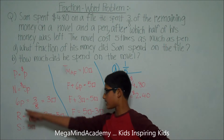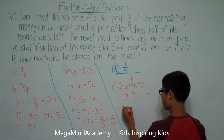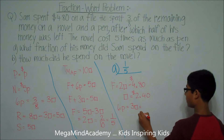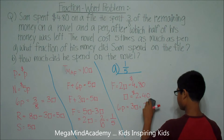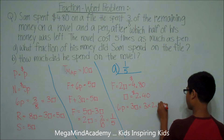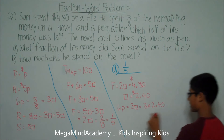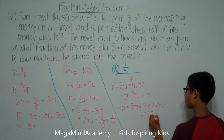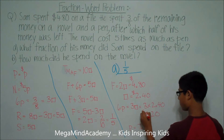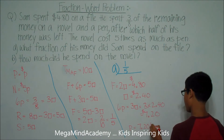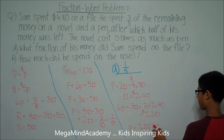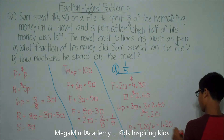This means that 6P, or six pens, is equal to three units, which is equal to three times $2.40, which is equal to $7.20. So P, the cost of one pen, is equal to $7.20 divided by six, which is equal to $1.20.